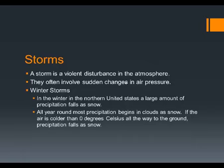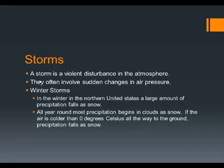Winter storms typically occur in the northern part of the United States. They typically will have a large amount of snowfall with them. As we get further to the southern part of the United States, typically they don't get the snowfall that we get. All year round, most precipitation in clouds begins as snow. However, as it falls closer and closer to the ground level, it will warm up as the ground level is warmer, and that precipitation will eventually turn over to rain. So in order for snow to occur, we have to have precipitation that stays cold as it gets to ground level.